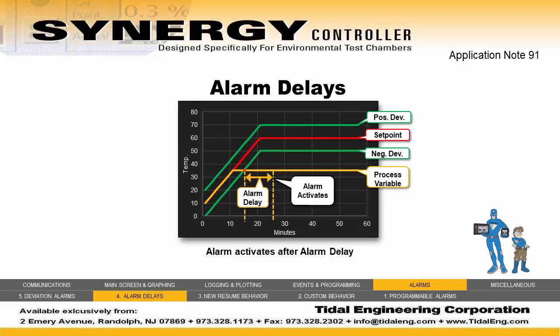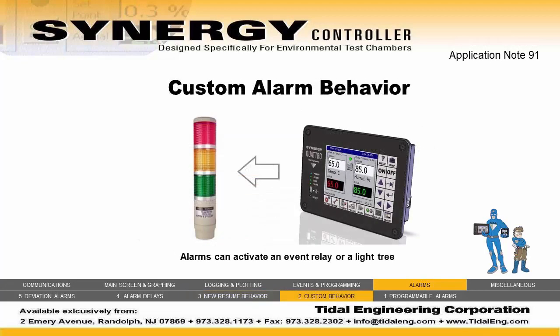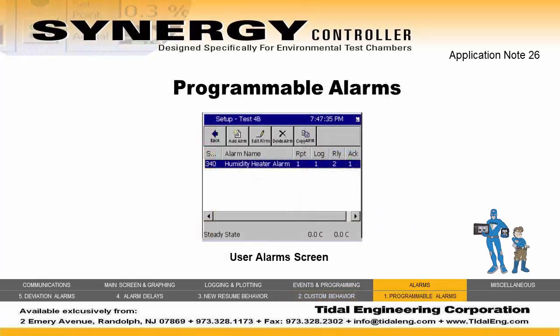Your alarm will trigger only if the alarm conditions have been met for a user-specified alarm delay period. Number 3: Resume Behavior Options. In addition to stopping the program, alarms can now pause the program, allowing the user to clear the alarm and resume the program from where it left off. Number 2: Custom Behavior. Users can enable custom alarm behaviors, such as driving an event relay or a light tree. Number 1: Programmable Alarm System. The Synergy Controller's user-programmable alarm system can create customer-specific alarms for RTD temperatures, UUT temperatures, as well as voltage inputs, digital inputs, and auxiliary sensors such as oxygen and pressure.